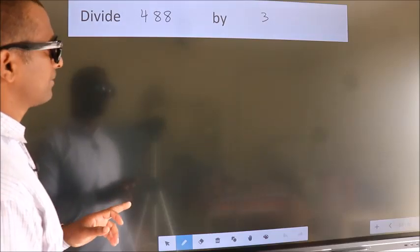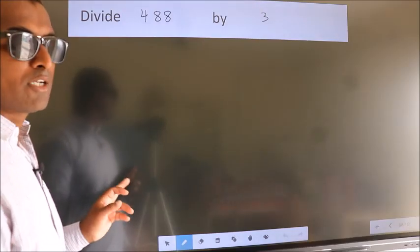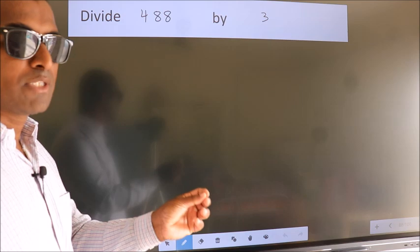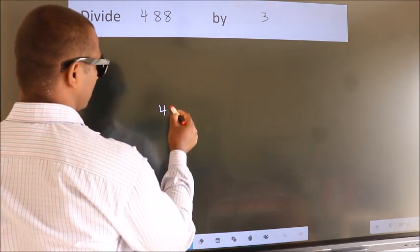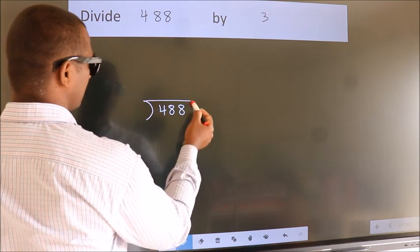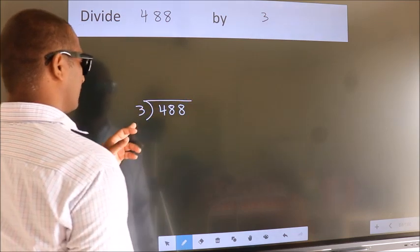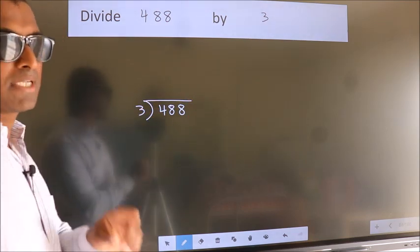Divide 488 by 3. To do this division, we should frame it in this way. 488 here, 3 here. This is your step 1.